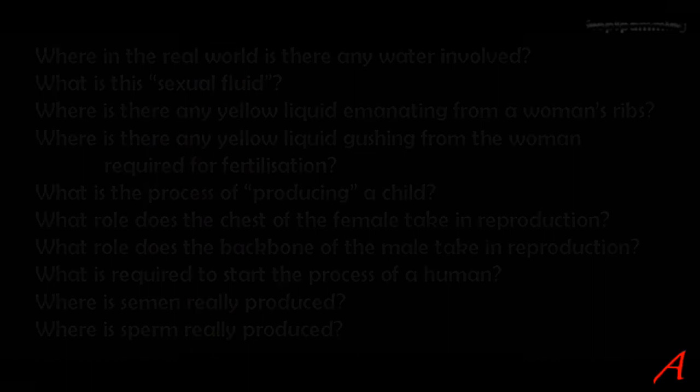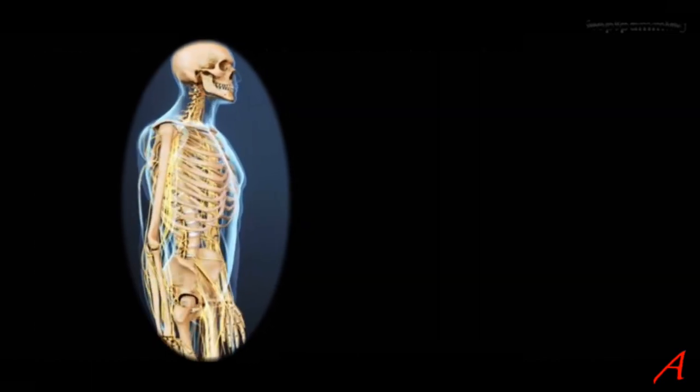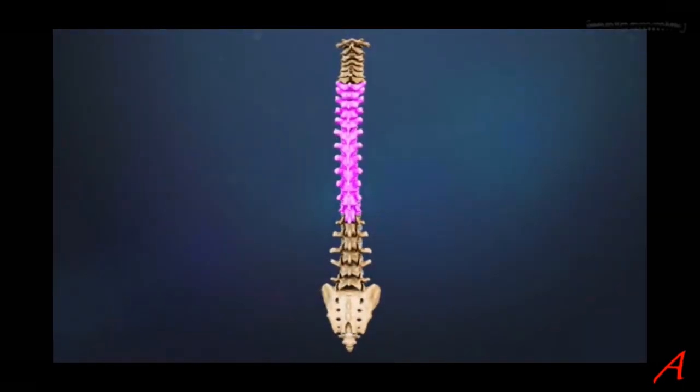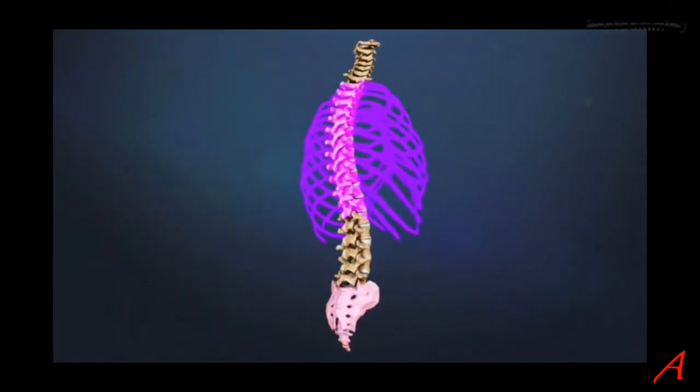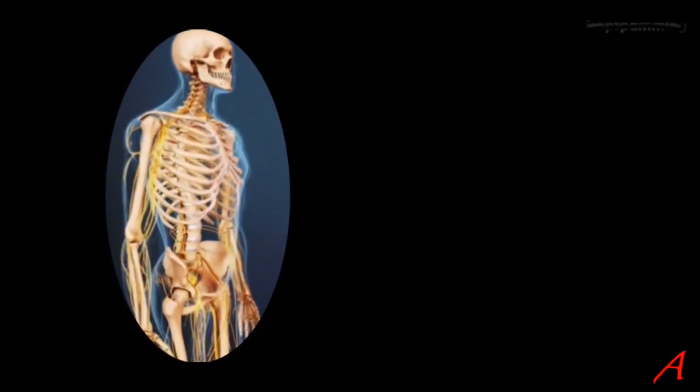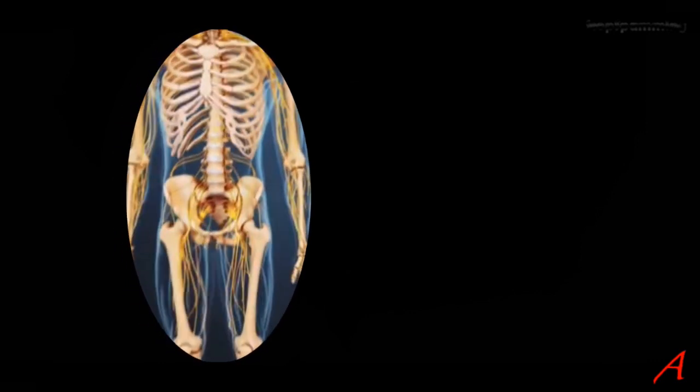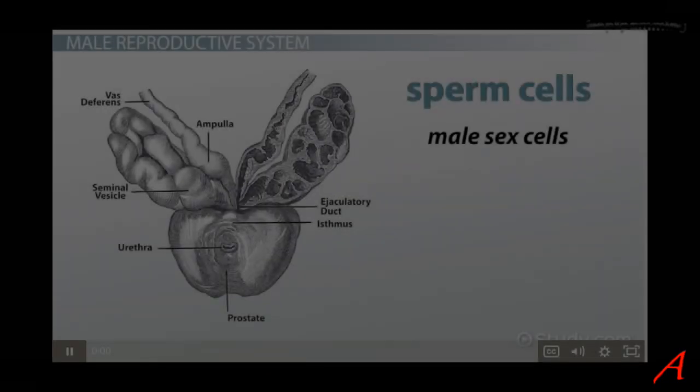And what role does the chest of the female take in reproduction? And what role does the backbone of the male take in reproduction? And what is required to start the process of a human? And where is semen produced? Where is sperm produced? All these open questions, all these words that are being chucked around without ever having any kind of substance, any kind of real explanation attached to them. Now, this is a see-through human body, where we can locate the different components quite easily today in the 21st century. If we take the spine, the vertebral column, and then we add the rib cage, this is what we get. Backbone and ribs. Now, this is where everything is positioned, and when applying the correct ratio of the different components and their relative sizes, this is what it looks like.